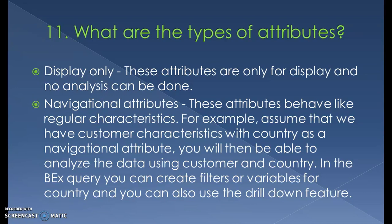What are the different types of attributes? There are display attributes and navigation attributes. Display attributes are used only for display purposes and not for analysis. Navigation attributes behave like regular characteristics — for example, if you have a Customer characteristic with Country as a navigation attribute, you can analyze data using both Customer and Country. You can create filters or variables per country and use drill-down in reports to restrict data by country.